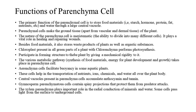Chloroplasts present in all green parts of a plant with chlorenchyma perform photosynthesis. Parenchyma participates in forming plant structure by giving mechanical rigidity to it. Various metabolic pathways, synthesis of food materials, and energy for plant development and growth take place in parenchyma cells. Aerenchyma cells facilitate buoyancy in some aquatic plants. These cells help in the transportation of nutrients, ions, chemicals, and water all over the plant body. Central vacuoles in parenchyma cells accumulate anthocyanin and tannin. Gymnosperm parenchymatous cells contain spiny projections that protect them from predator attacks. The xylem parenchyma plays an important role in the radial conduction of minerals and water.